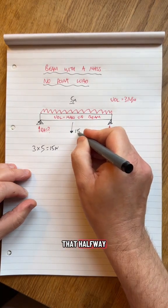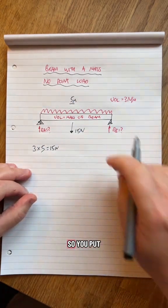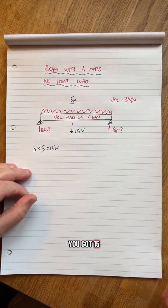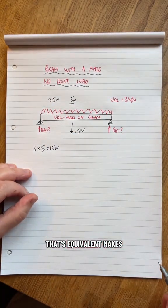What you do is you put that halfway, because the UDL acts across the entire length of the beam, so you put it halfway of where the UDL acts. You've got 15 newtons and it's 2.5 meters in. That's equivalent, makes it easy for us.